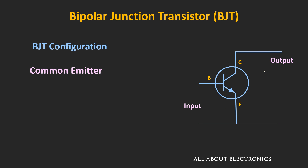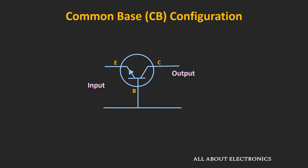In this particular video, we will learn about the common base configuration. In the common base configuration, this base terminal is common between the input and the output side. That means the input is applied between the base and the emitter terminal, and the output is measured between the collector and the base terminal.